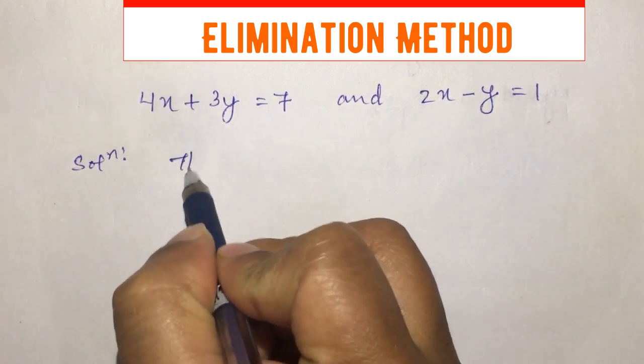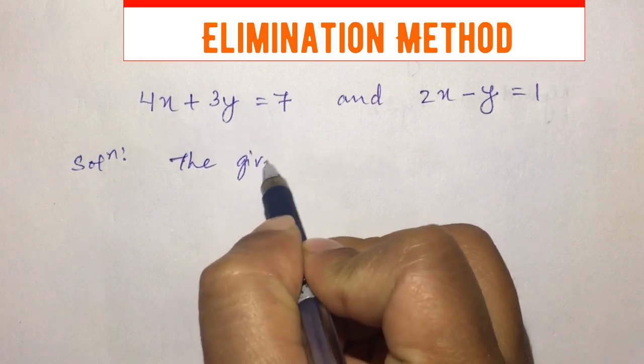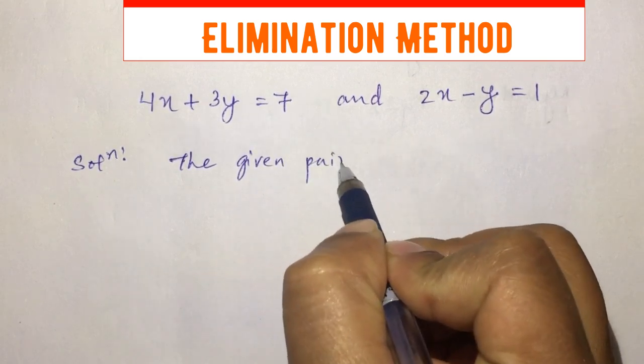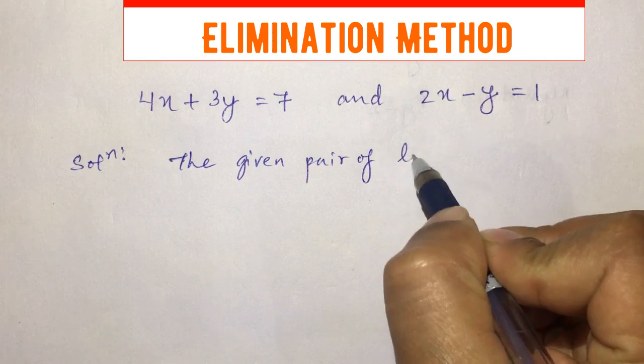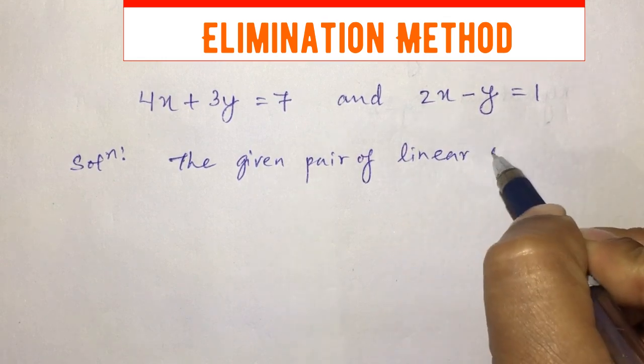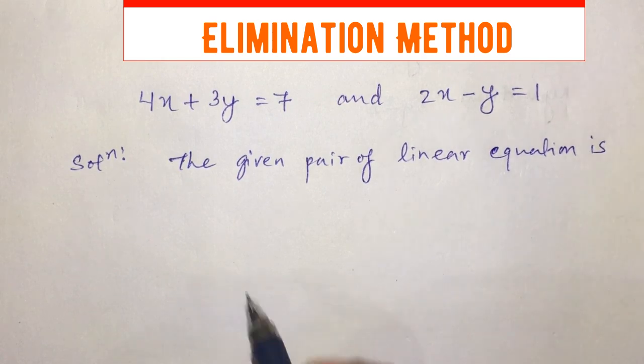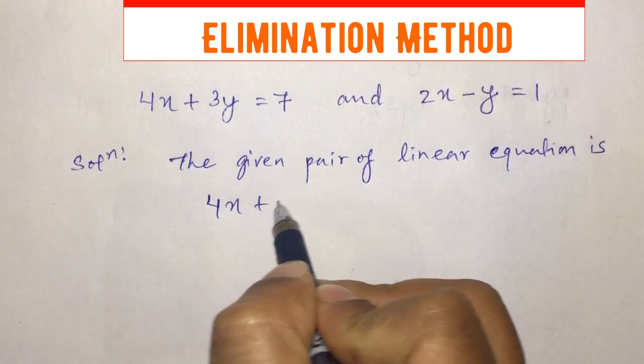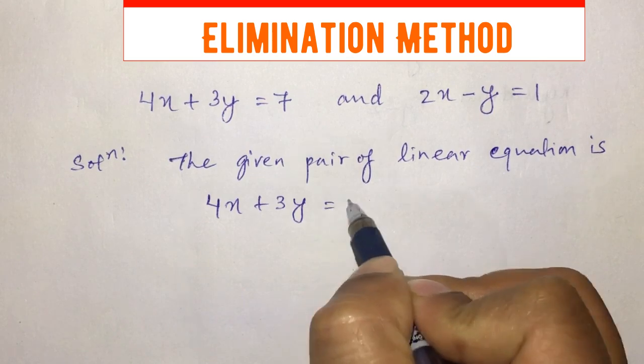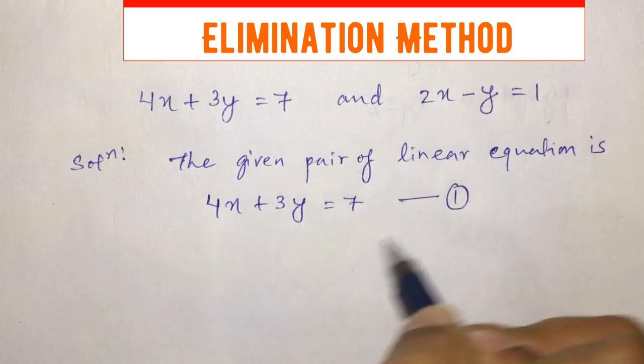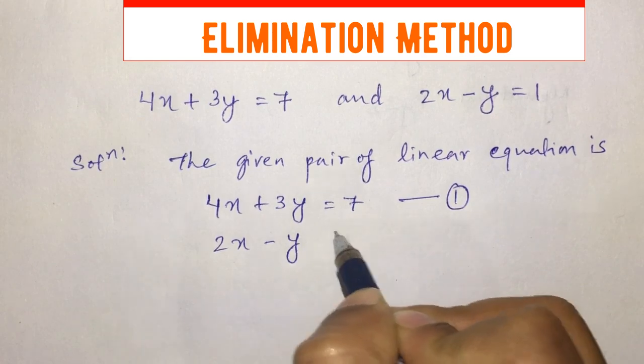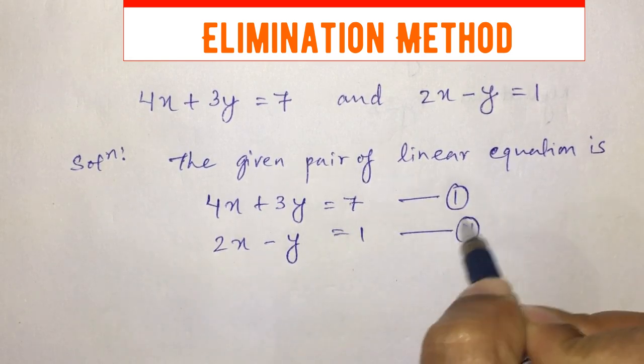So the given pair of linear equations is 4x plus 3y equals 7, equation number 1, and 2x minus y equals 1, equation number 2.